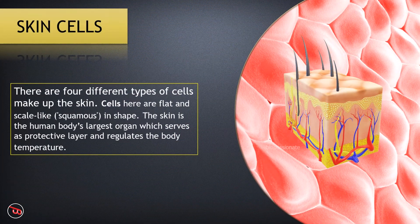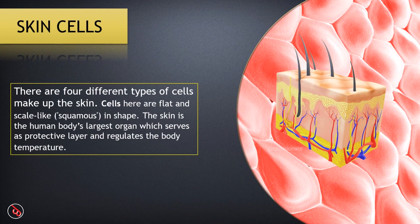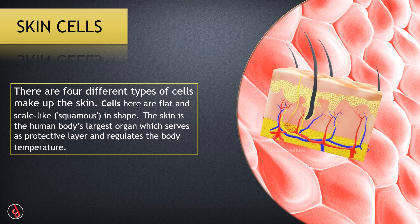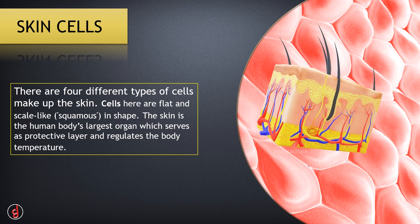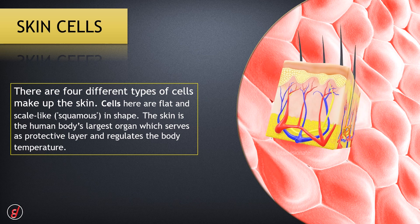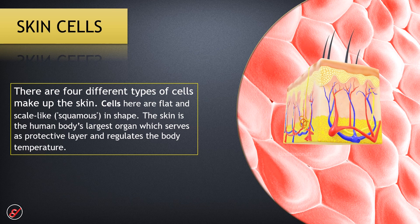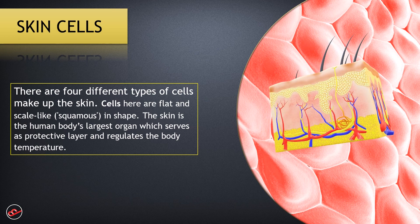Skin cells are epithelial cells. There are four different types of cells that make up the skin. Skin is the largest organ of the human body, which serves as a protective layer and regulates body temperature.